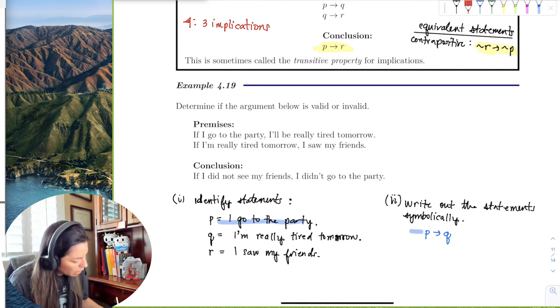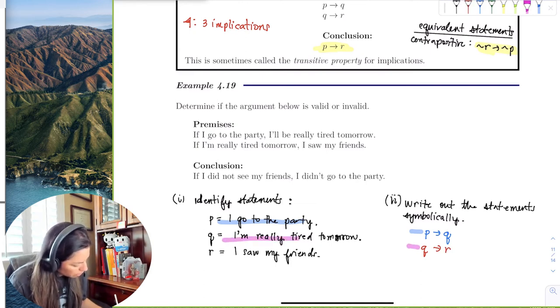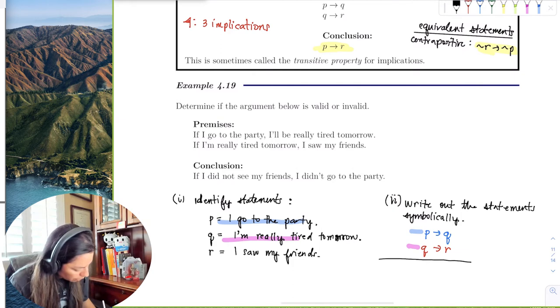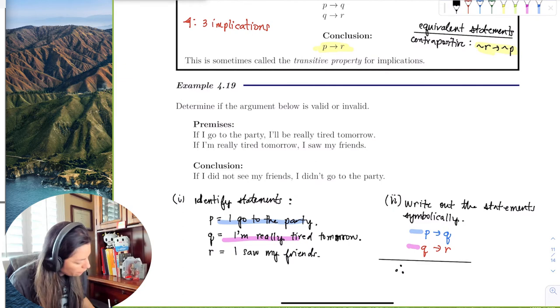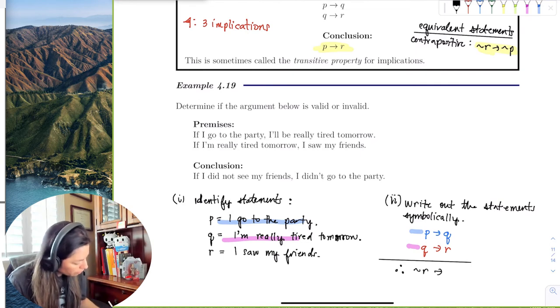The next one is, if I'm really tired tomorrow, so that's Q, then I saw my friends, which is R. And the conclusion, so now I write a little bar, and then I say the conclusion, therefore, if I did not see my friends, so not R, then I did not go to the party, which is not P.